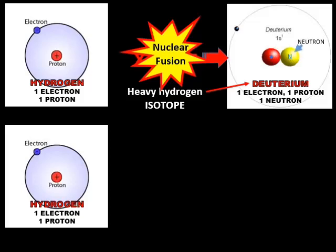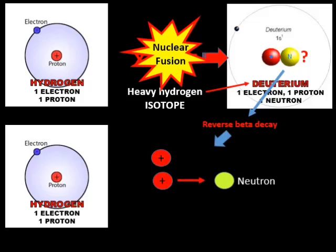A neutron is a particle with no charge. But where did the neutron come from? It is created in a process called reverse beta decay. When the two hydrogen nuclei fuse together, one of the protons decays into a neutron. But how does that proton lose its charge to become a neutron?